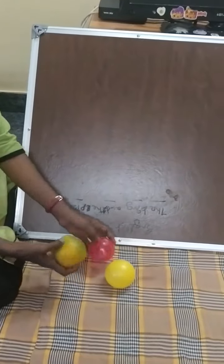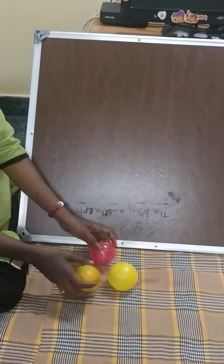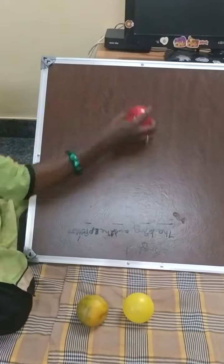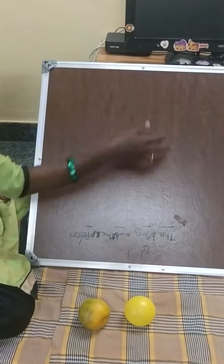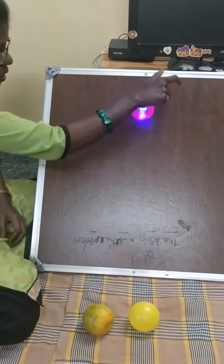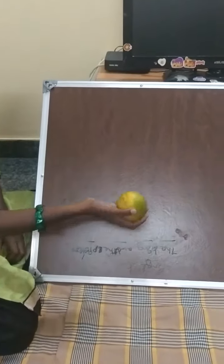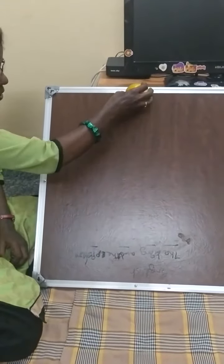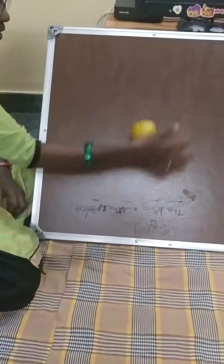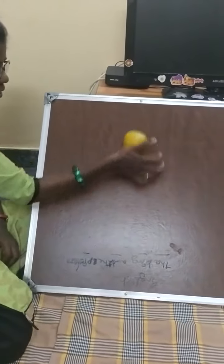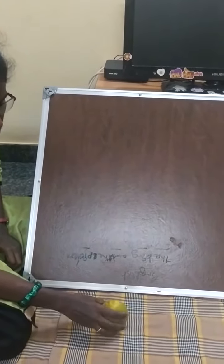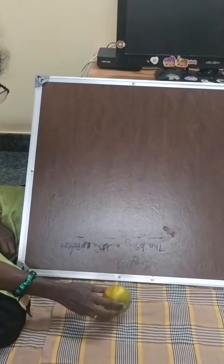Now let us see with curved surface. Whether it will slide or roll? Can you see — it is rolling! Rolling means it will spin like this. See, it is rolling. See this orange — it is rolling, it is not sliding. If I leave it in this direction it will roll, if I leave it like this also it will roll. So objects which have a curved surface will only roll.